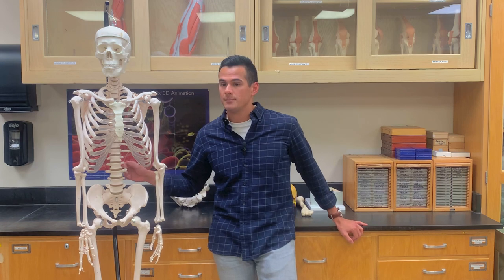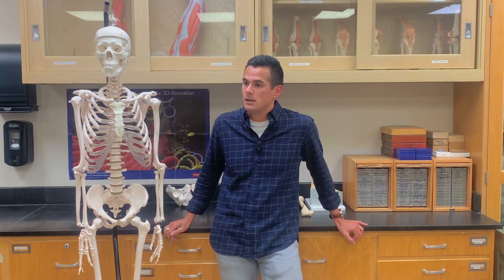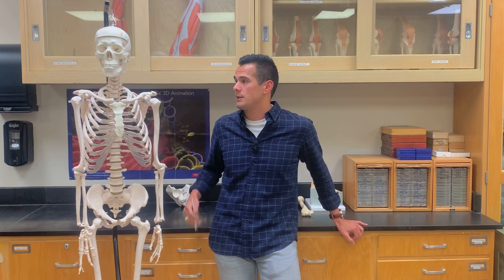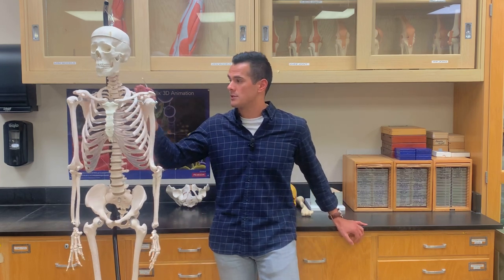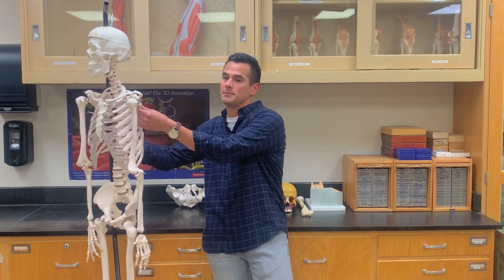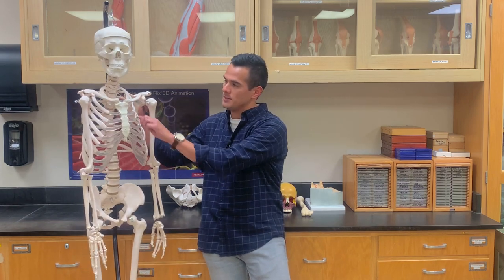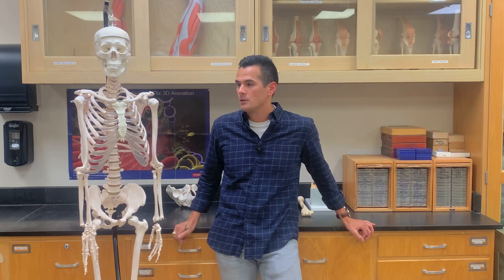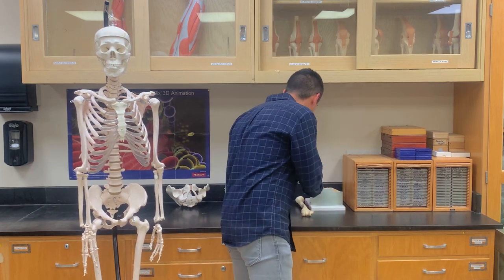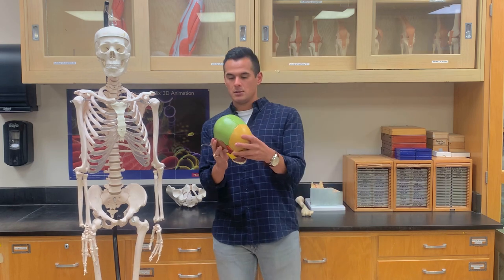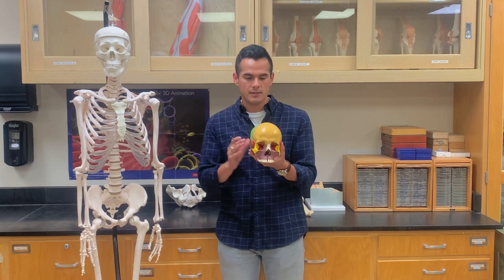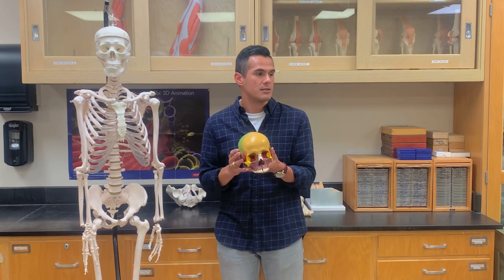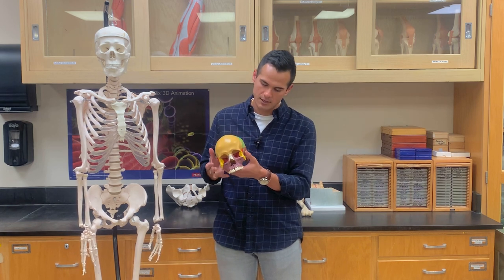Irregular bones include the vertebrae. We also have flat bones — the scapula, the ribs, and the sternum are flat bones. Looking at the skull, which is divided into many different components, the bones of the skull are categorized as irregular because of their different shapes — they don't fit neatly into the short, long, or flat categories.